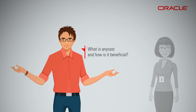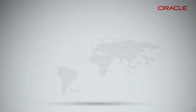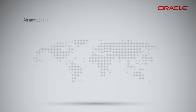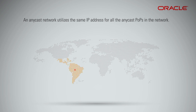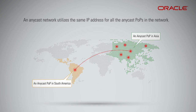What is Anycast and how is it beneficial? An Anycast network utilizes the same IP address for all the Anycast pops in the network. This means that an Anycast pop in South America has the same IP address as an Anycast pop in Asia. This is based on the fastest response time, so will typically be the closest, but may not be due to current internet conditions.